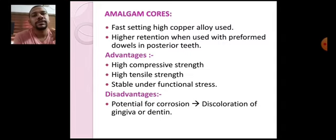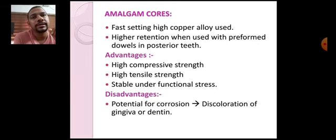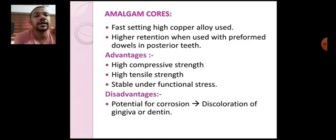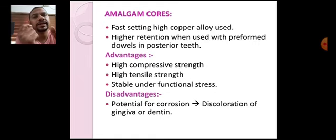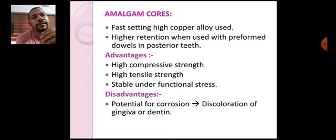Now for the disadvantages of amalgam cores. It has a tendency for corrosion — if you are using a metal post with an amalgam core over it, the chances of galvanic corrosion are more, which can cause root fracture or discoloration of gingiva or dentin. When you go for amalgam core, you have to use retentive pins, which I will discuss later — some three or four retentive pins in order to aid retention of the amalgam core to the tooth.